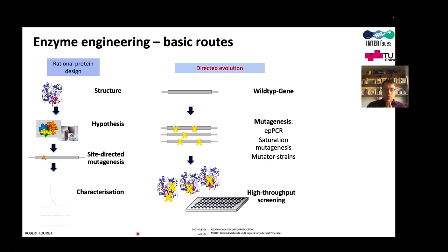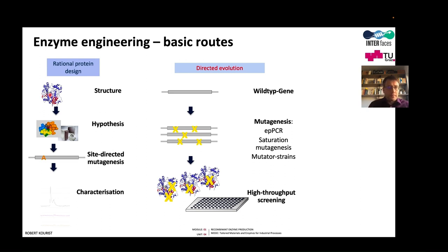There are two basic strategies to reduce the screening effort. The first is called rational protein design. This works by introducing site-directed mutagenesis, usually on the basis of a hypothesis. We hypothesize that exchanging, for instance, an alanine to a valine will change the selectivity of the enzyme in a certain way. We obtain this hypothesis based on structural considerations, usually requiring a good structure, good mechanistic knowledge, molecular modeling, bioinformatic approaches, or knowledge from similar enzymes.